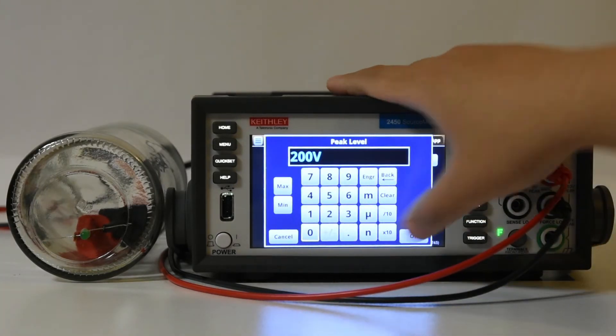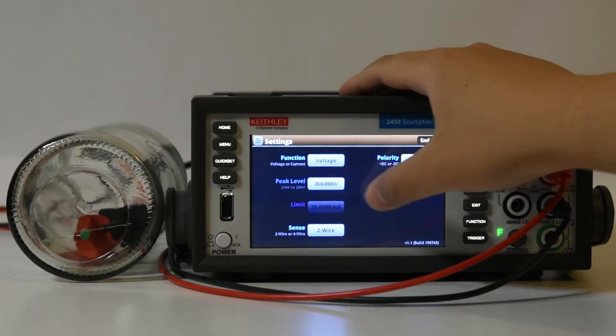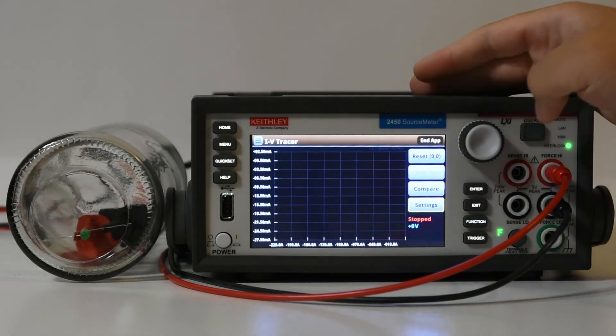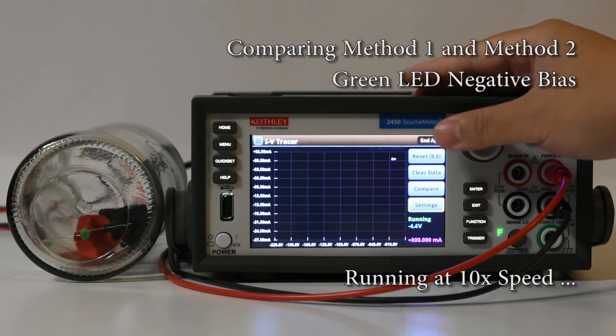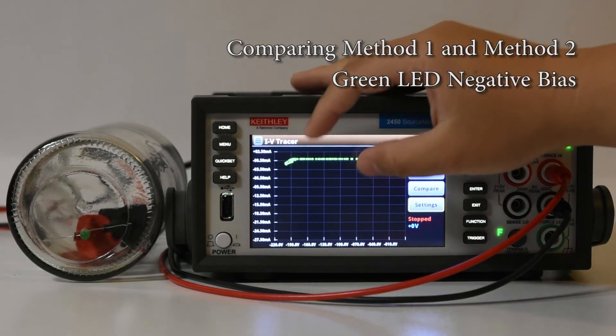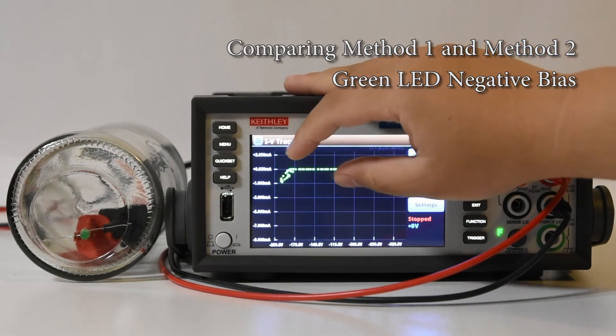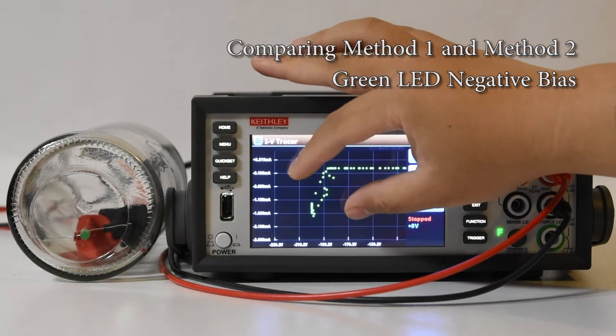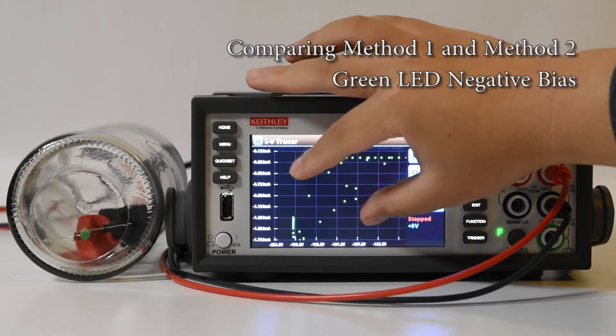It is also possible to trace negative voltages. Here I've decided to trace the reverse bias characteristics of the LED down to minus 200 volts. Being cautious I take the steps slowly, but here it's been sped up by tenfold. It seems that this LED is particularly good, handling about minus 170 volts without much in the way of current flow.